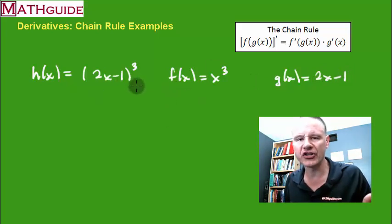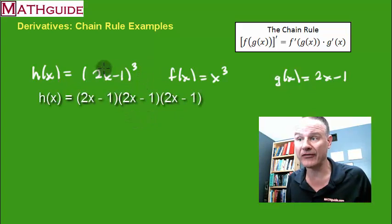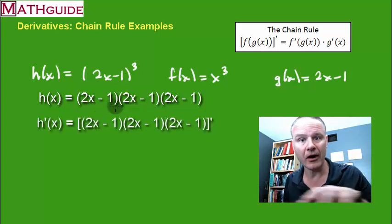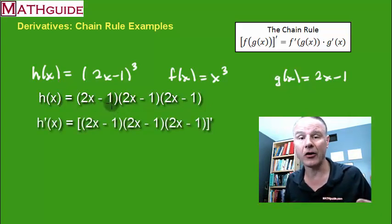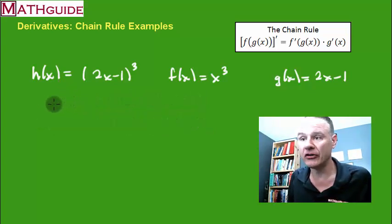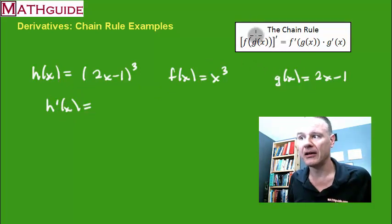If we didn't use the chain rule, how would we do this problem? We would have to take 2x minus 1 times 2x minus 1 times 2x minus 1, do that multiplication which would be time consuming and tedious, and then find the derivative of the entire polynomial using the power rule. Well, there's a faster way to do it. The faster way is to use this format. Find the derivative of the composition.